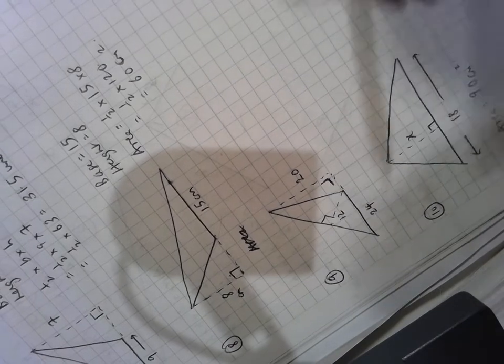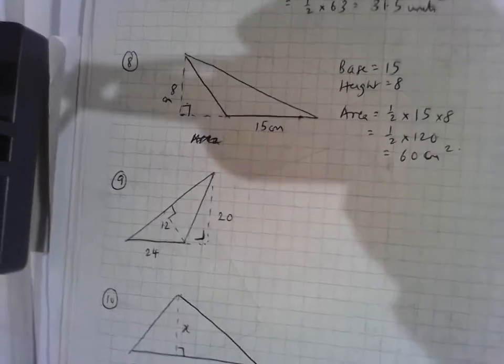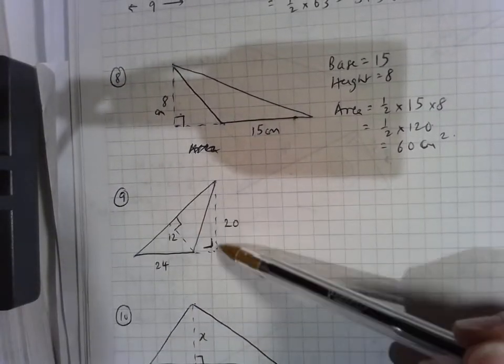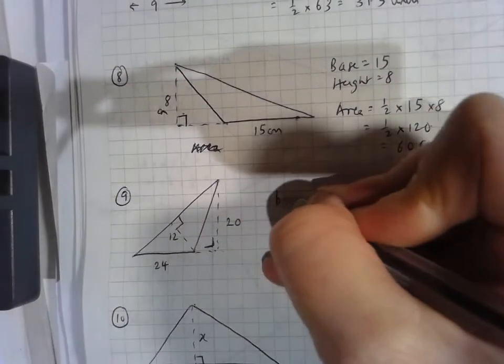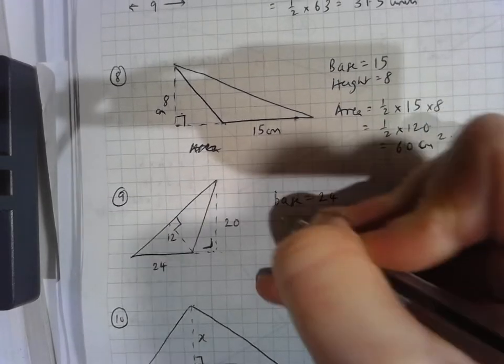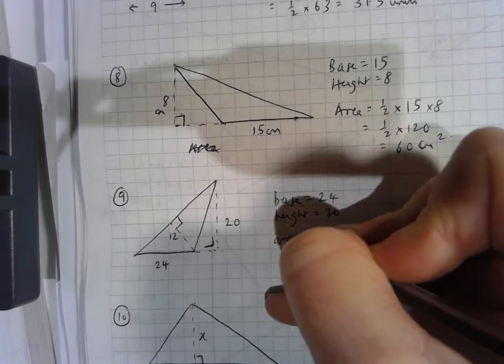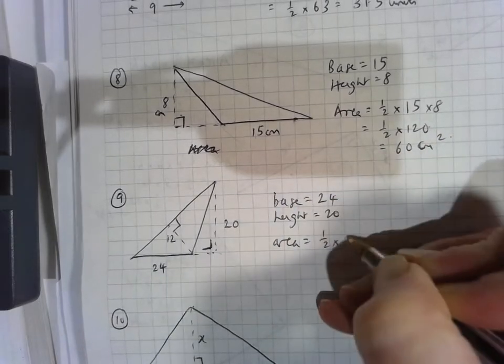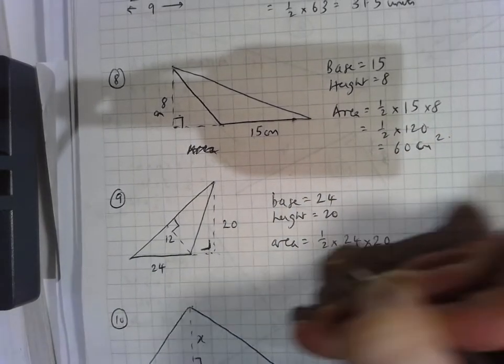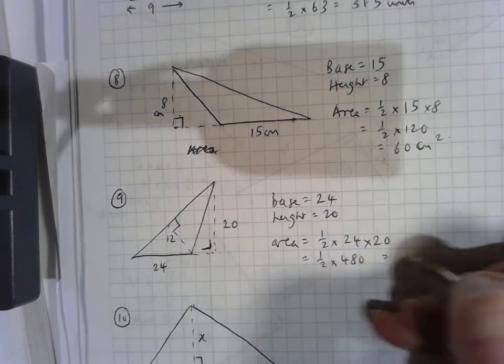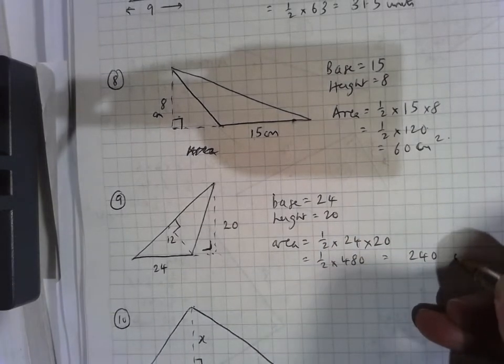In fact, what we have to do is to go with this being the base, 24, and this being the height of 20. So the base equals 24. The height equals 20. So the area is a half by the base, which is 24 by 20. So a half of 480, which is 240 units squared.